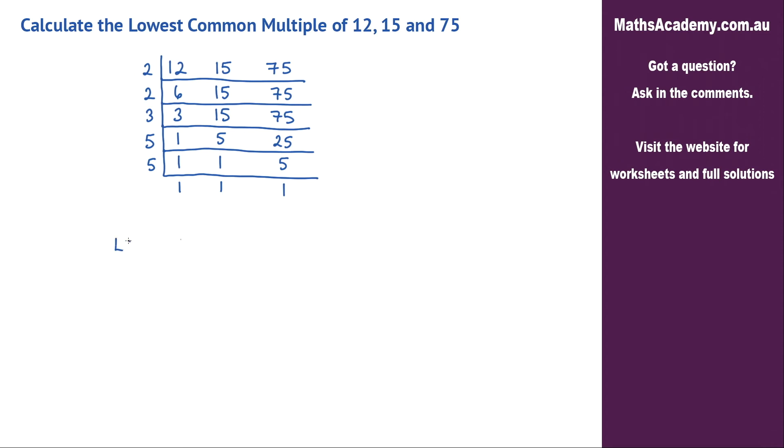So the lowest common multiple is actually found by taking the product of these numbers here. So I've got two multiplied by two, multiplied by three, multiplied by five, multiplied by five. And that is equal to 300.